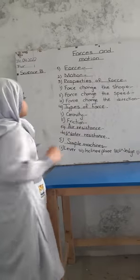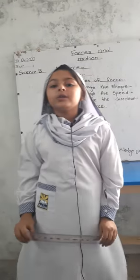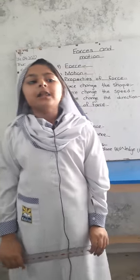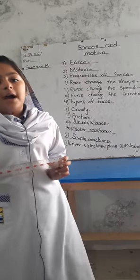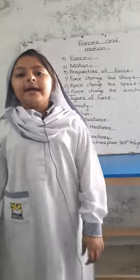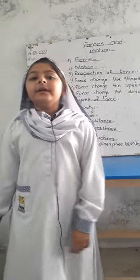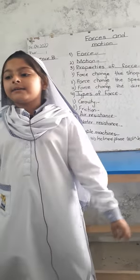Types of force. Gravity — gravity is a force that attracts all objects toward the center of the earth. For example, I jump in the air and gravity makes sure I come back down.